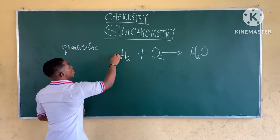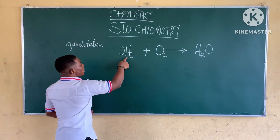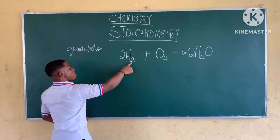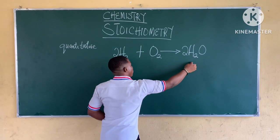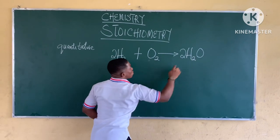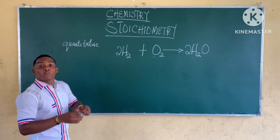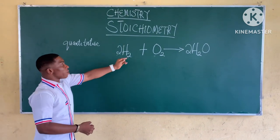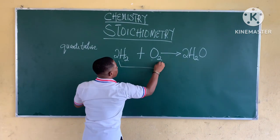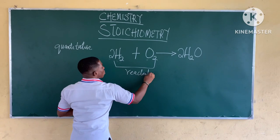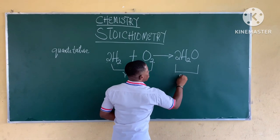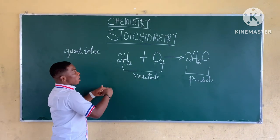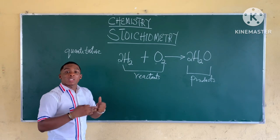To balance this equation of reaction, I'm going to add a coefficient of 2 to hydrogen and 2 to water, such that hydrogen on the left-hand side becomes 2 times 2 = 4, and hydrogen on the right-hand side is also 2 times 2 = 4. Oxygen on the left-hand side is 2 and on the right-hand side is 2. The equation of reaction must be balanced before we proceed to any calculation. The left side is called the reactant, and the right side is called the product.